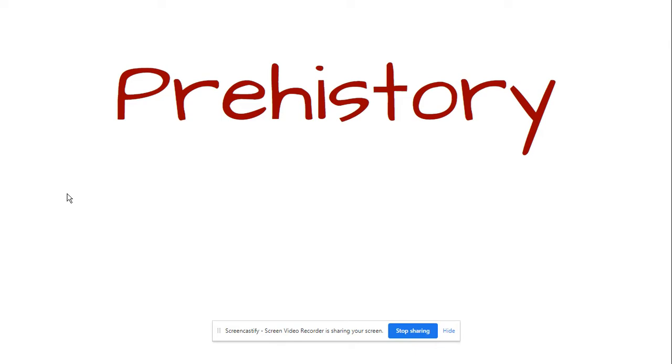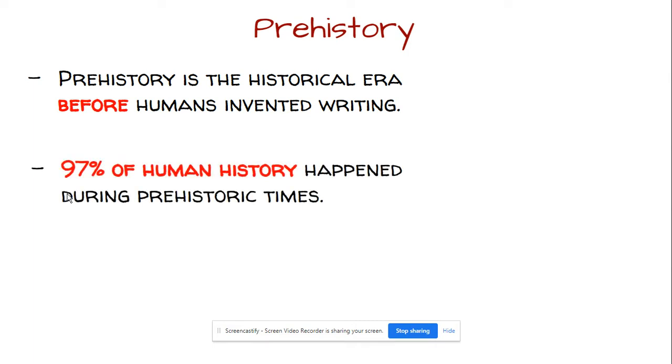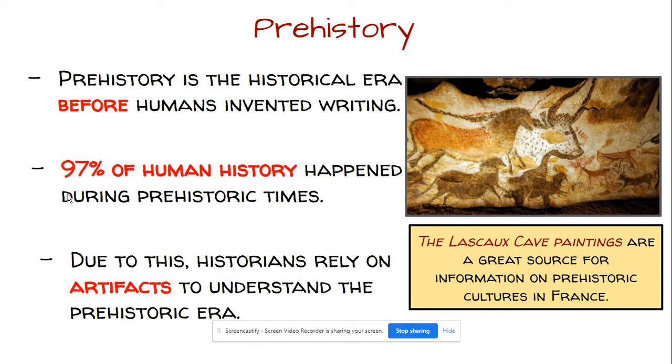Before we had written history, we had a historical era that we call prehistory. Prehistory is the historical era before humans invented writing. Writing is a relatively new invention within the course of human history. In fact, 97% of human history happened during prehistoric times, before humans actually invented a way of reading and writing. Due to this, historians really rely on artifacts to tell us the deeper story of this prehistoric era. Pictured here is some cave art that we'll look at together this year in a town called Lascaux, and this is known as the Lascaux Cave Paintings.